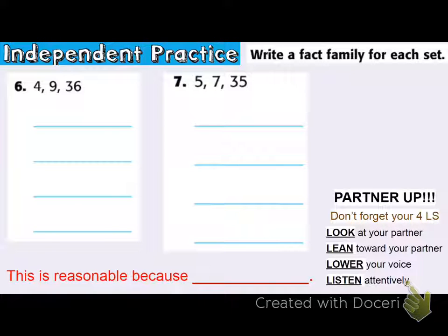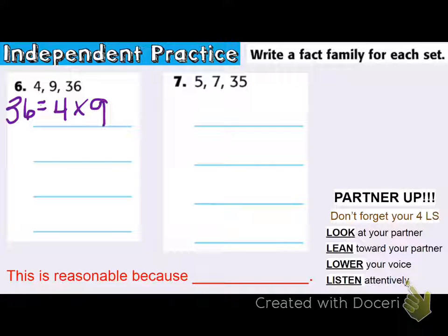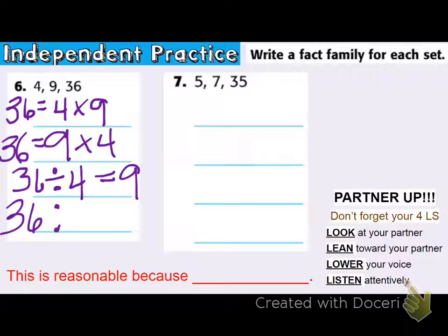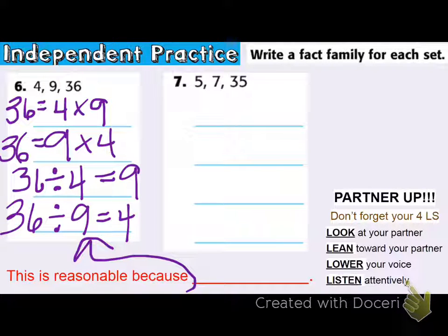Independent practice, problem number six: four, nine, and 36 — they're all part of a family. We need to show that they are connected. Starting with 36: four times nine is 36, and nine times four equals 36. Now thinking division: if I have 36 total and put those into four equal groups, then each group would get nine. Or if I start with 36 and put it into nine equal groups, then each group will have four. It's reasonable because all those numbers are part of the fact family — we can use multiplication and division to help us if we see the relationship between the two.